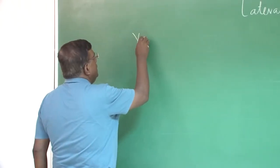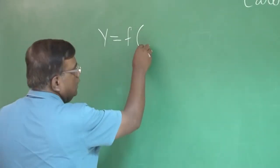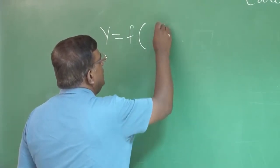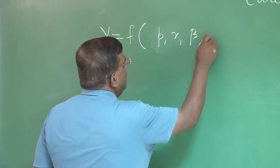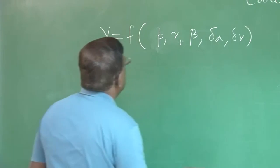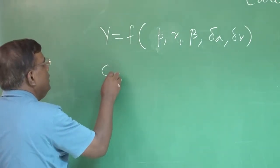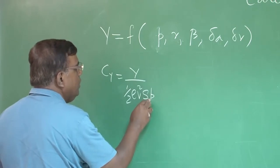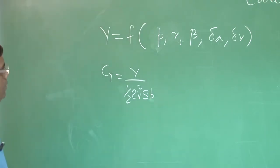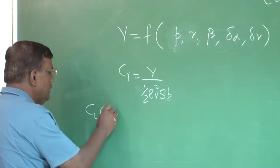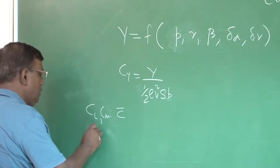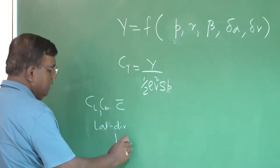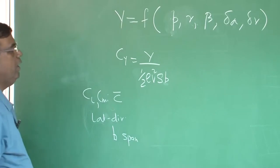If I write y, it is equal to a function of p, r, beta, delta_a, delta_r. Then you know that Cy, which I can define as y divided by half rho v-squared times s times b. This is to be noted: for Cl and Cm, the characteristic length was mean aerodynamic chord, but for all lateral-directional coefficients, the characteristic length is b, the span.